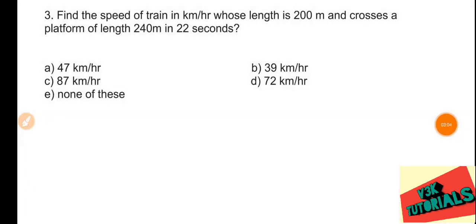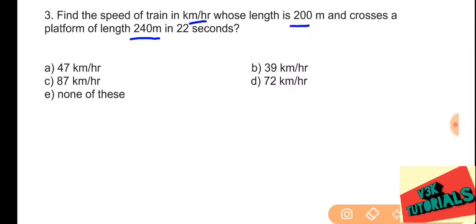Problem number three: find the speed of the train in kilometers per hour whose length is 200 meters and crosses a platform of length 240 meters in 22 seconds. Speed equals distance divided by time. The total distance is the length of the train plus the length of the platform.